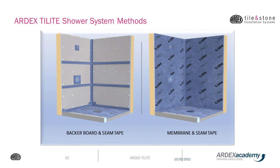There are two options for sealing the ARDEX TileLite shower systems. The first is where you treat the corners and the change of planes with the TileLite seam tape. It's always important to treat corners and changes of planes with seam tape to add reinforcement to those areas. The board seams can then be treated with the ARDEX CA20P or the seam tape, whichever the installer prefers. The second option — for steam rooms and steam showers — is to use the full sheet membrane on the walls, and then tie the transition in with the seam tape to the shower pan.